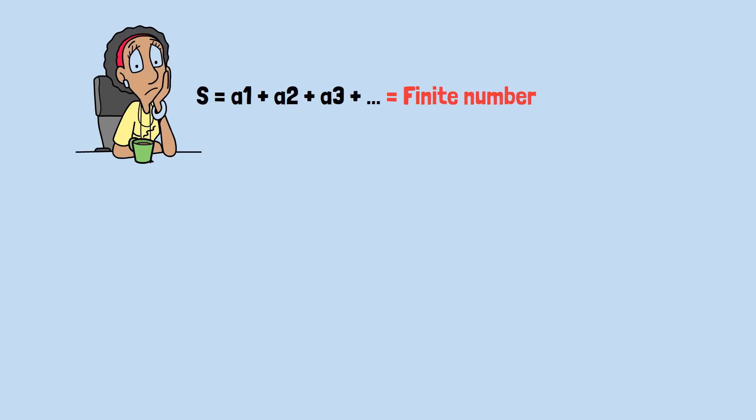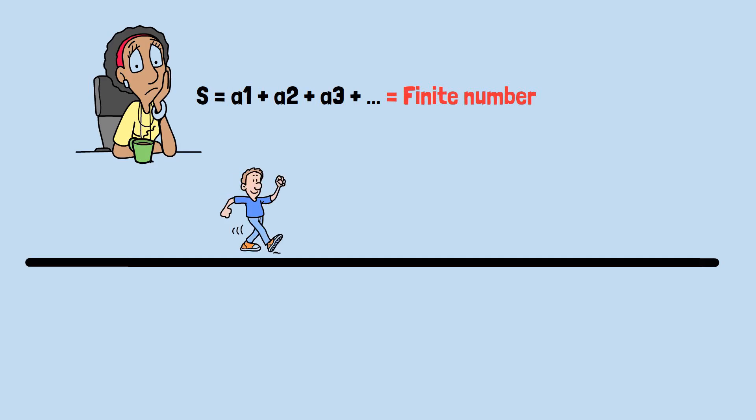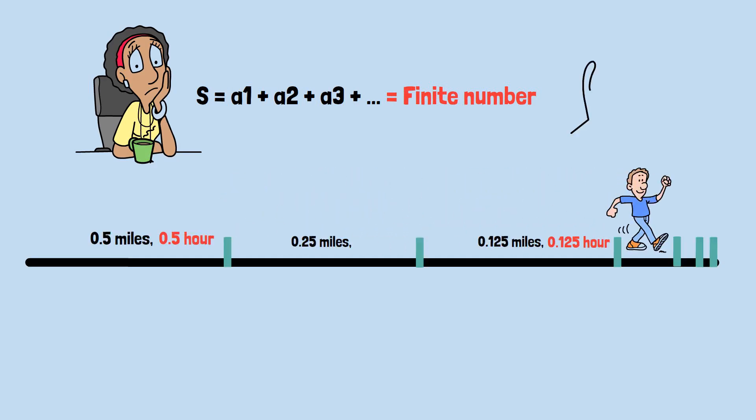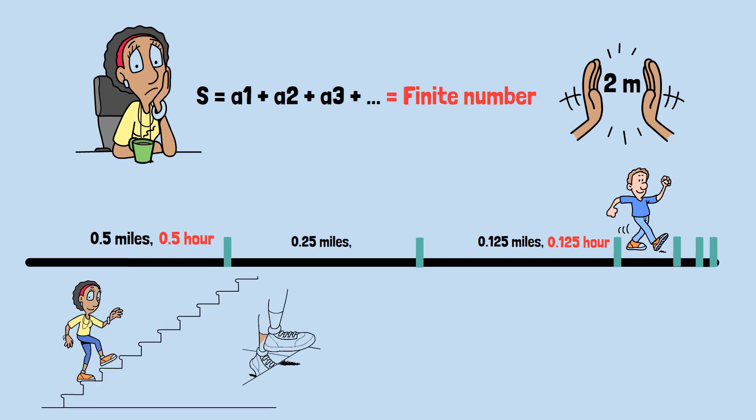But here's where things get truly weird. We've shown mathematically that the infinite series adds up to a finite number. We've proven that Zeno can reach the park in exactly one hour. We've demonstrated that your hands can travel exactly two meters and clap together. Yet the process Zeno described involves infinitely many steps. Each step takes a finite amount of time. Infinity times anything finite should be infinite, right?